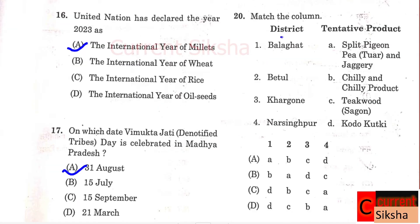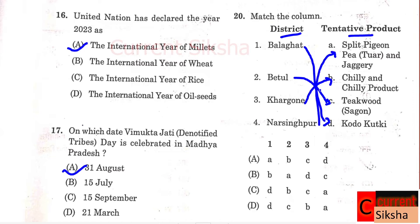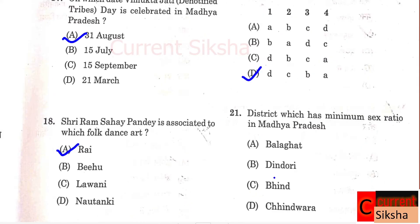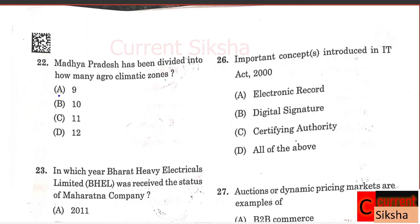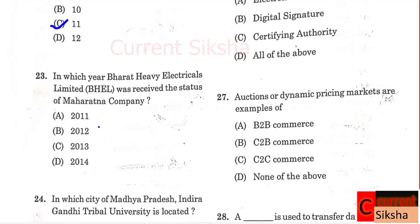Question 20: Match the column - District and tentative product. Balaghat: Kodo Kutki; Betul: Teak Wood; Hargaon: Chilli and Chilli products; Narsinghpur: Split Pigeon Pea; Tour and Jaggery. Correct option D. Question 21: Which district has minimum sex ratio in Madhya Pradesh? Correct option C - Bhind. Question 22: Madhya Pradesh has been divided into how many agro-climatic zones? Correct answer C - 11.